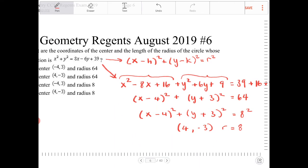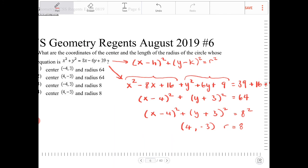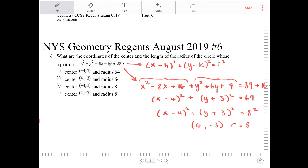Which option best fits this? That would be option 4. 4 comma negative 3, r is equal to 8.